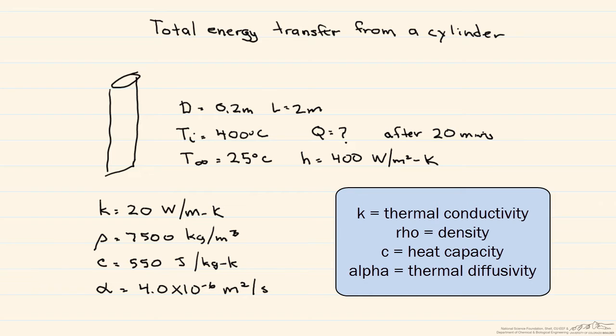So let's consider a rod. It has a diameter that's equal to 0.2 meters, it has a length of 2 meters, and its initial temperature is equal to 400 degrees C. The question is how much energy is transferred?